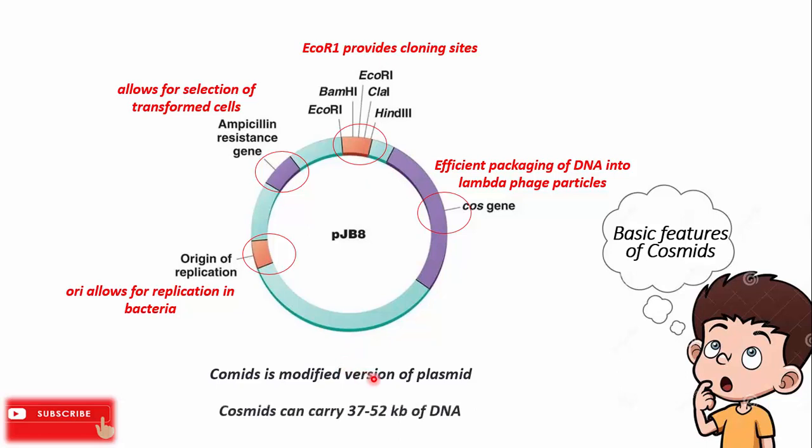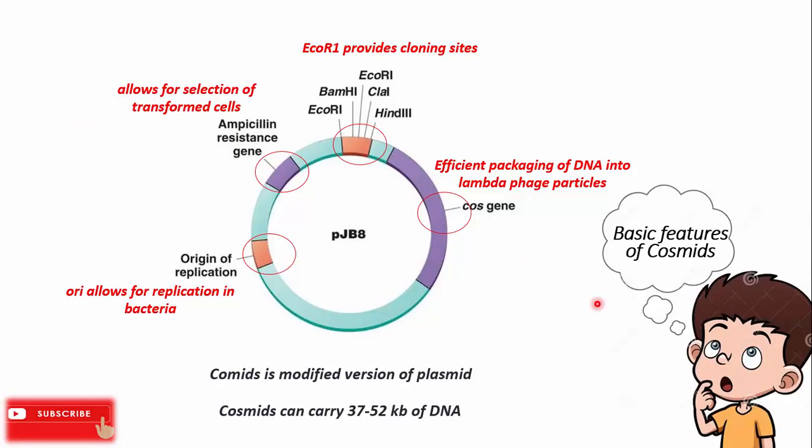Cosmid is actually a modified version of a plasmid and can carry around 35 to 52 kb of DNA. Here you can see our cosmid vector — it contains cos sites, an ampicillin resistance gene, and restriction sites for inserting exogenous DNA.